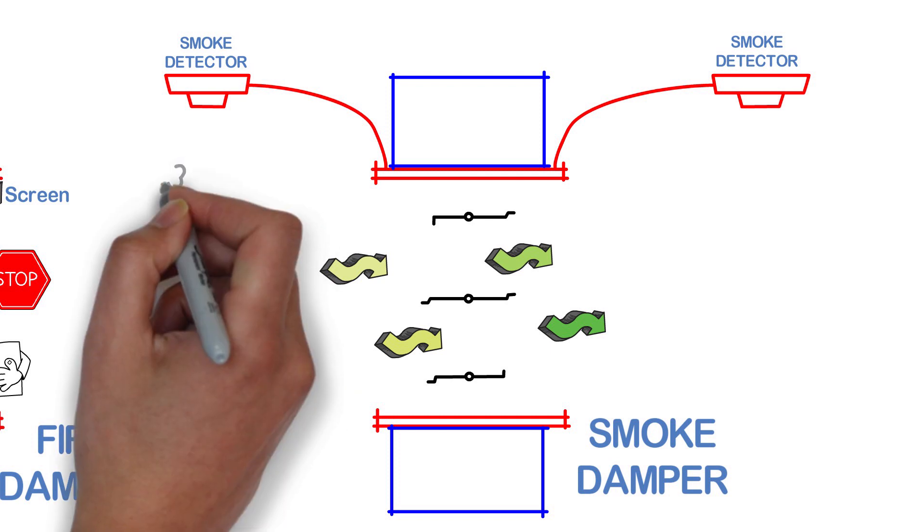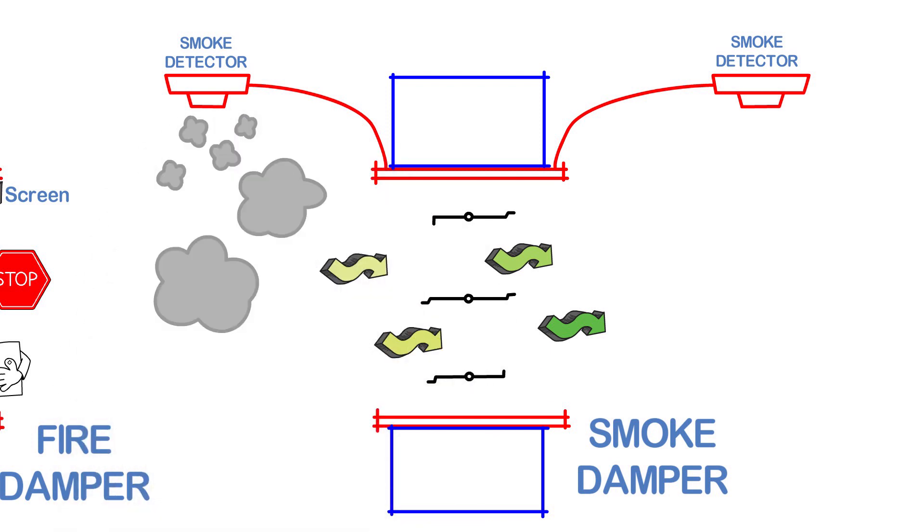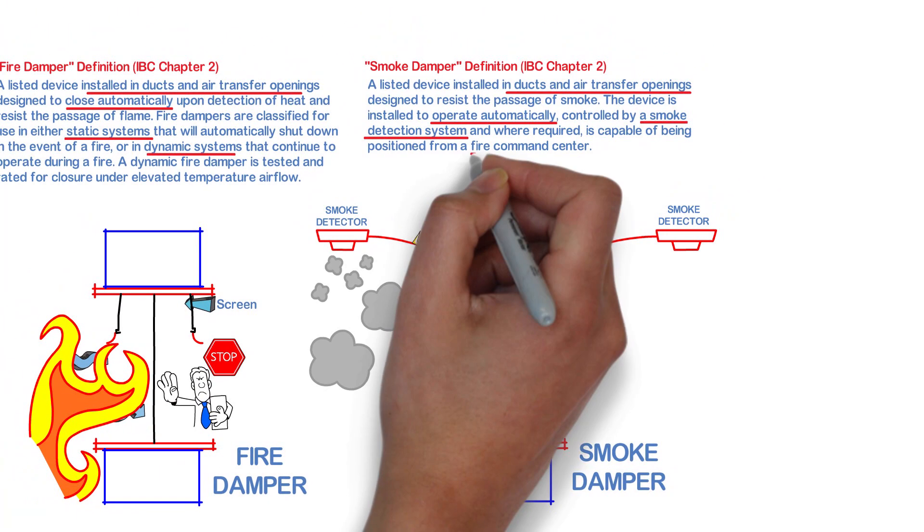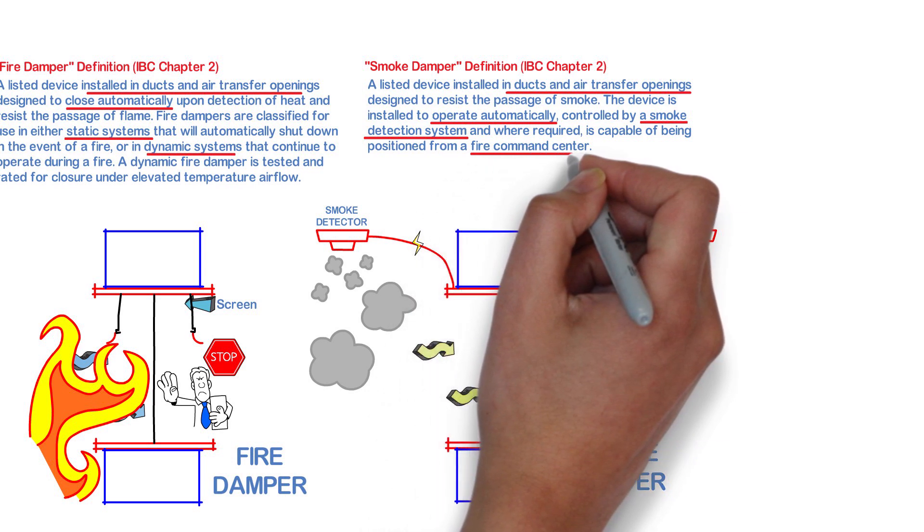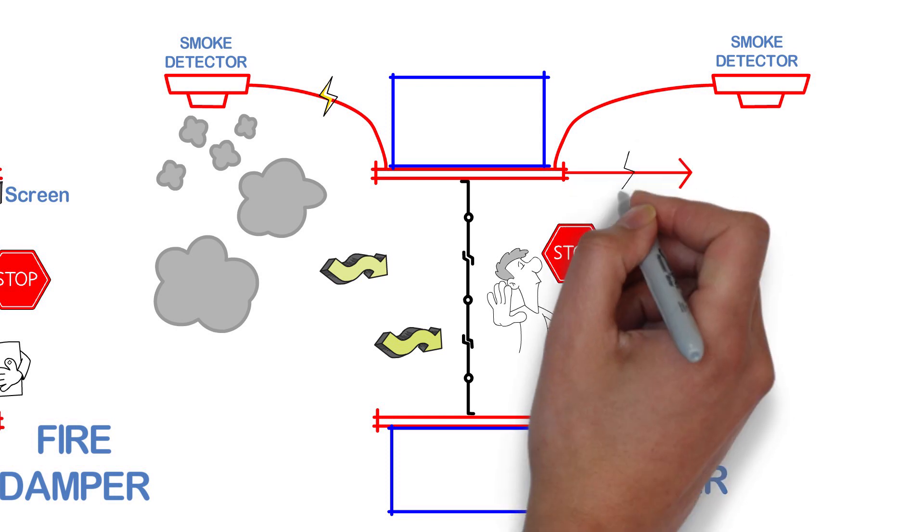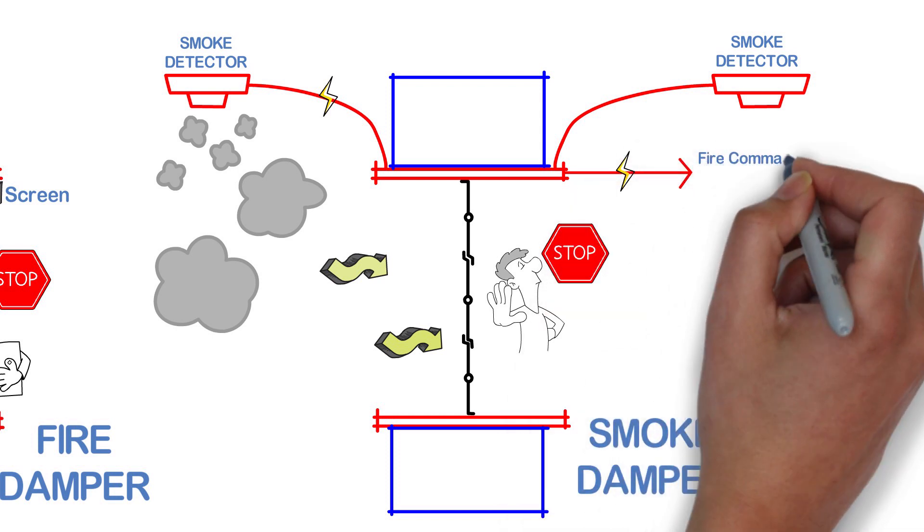But the fins can be activated by a smoke detection system. When the smoke detector is activated on either side of the damper, the fins will rotate and stop the flow of air. Also note that per the definition that we read earlier, the smoke damper may also be positioned from a fire command center. So the same system may also be activated by a building system such as a fire alarm.